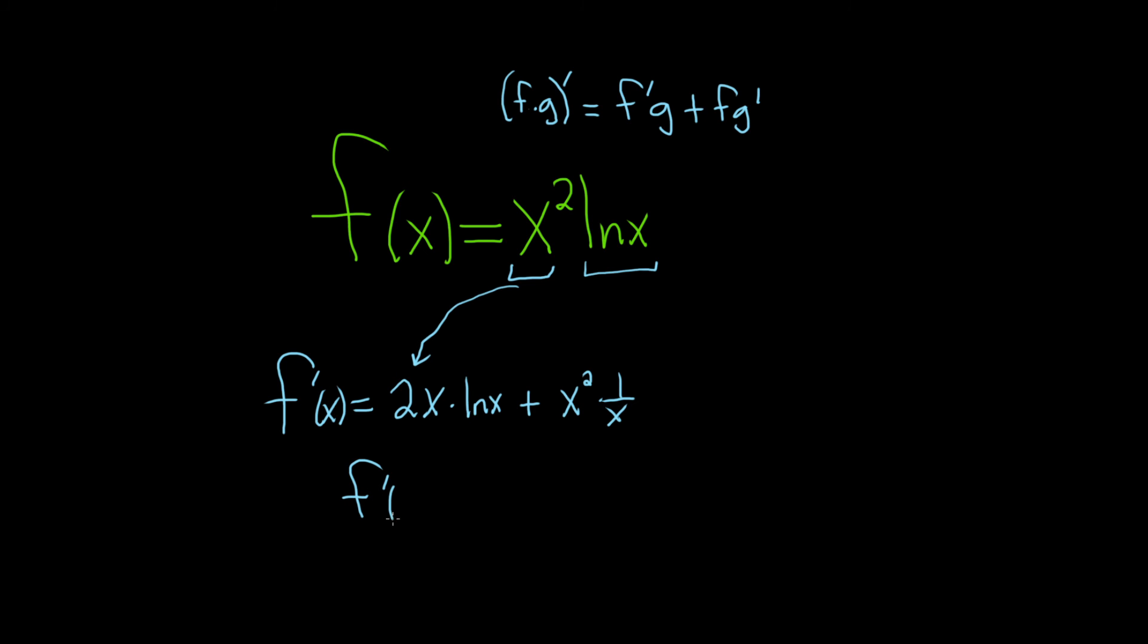So we end up with the derivative of f is equal to 2x times the natural log of x. And then here what happens, you get some cancellation. So one of the x's cancel, you're just left with x. And that would be the final answer.